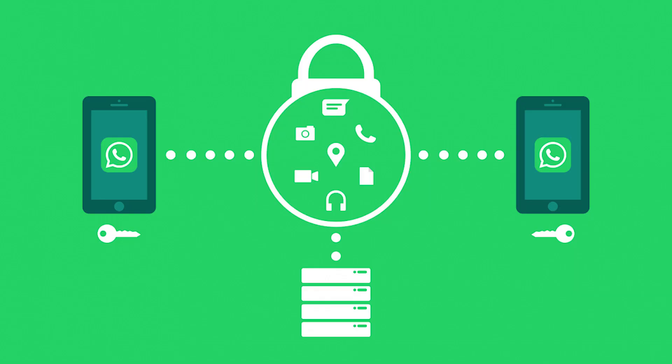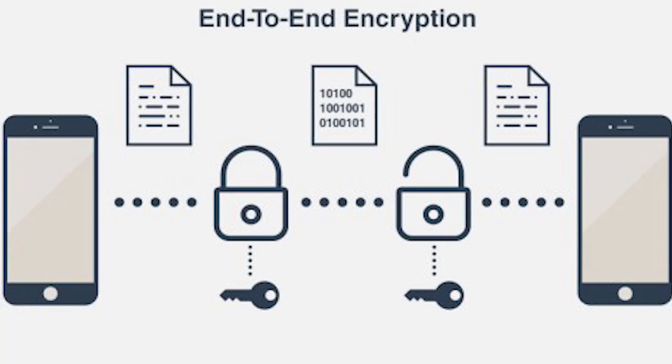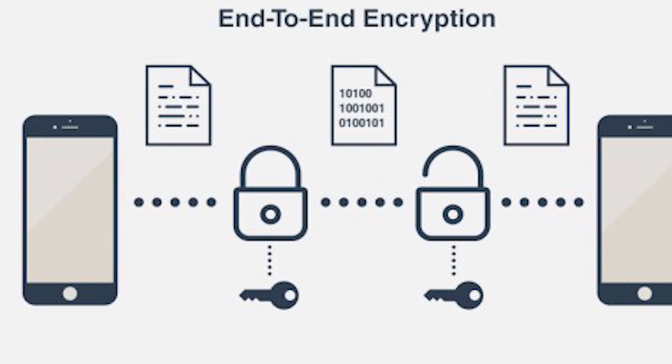If you have a WhatsApp update, we have end-to-end encryption. With end-to-end encryption, when you send a message to a user on WhatsApp, the data is encrypted with a code that travels securely. So if you have the app, your message will be encrypted from your phone to your friend's phone. There is one type of algorithm that runs the data from one point to your friend.